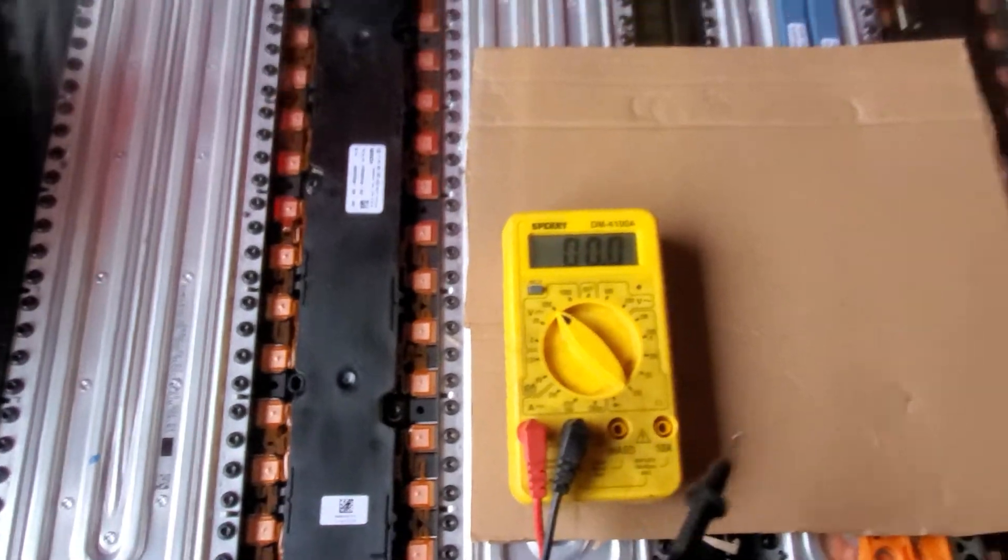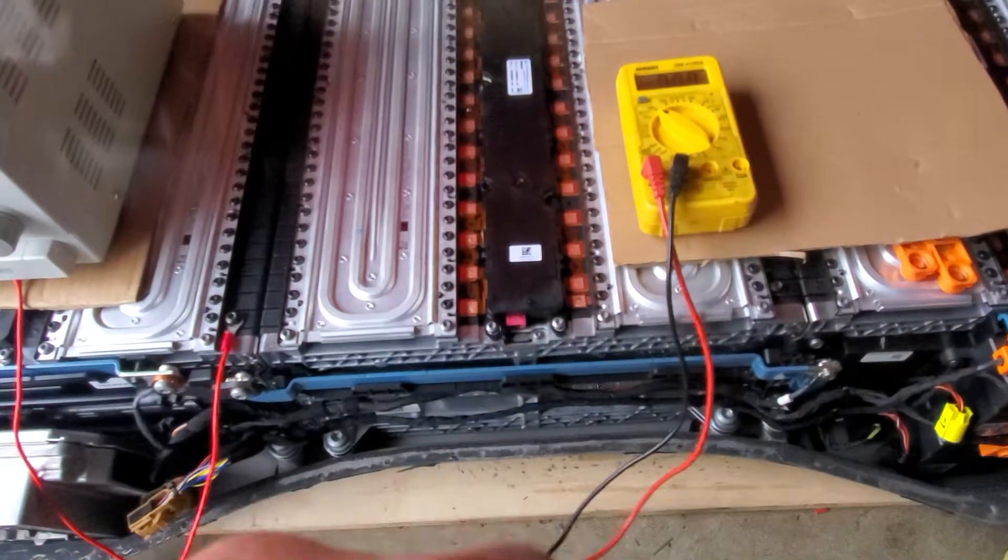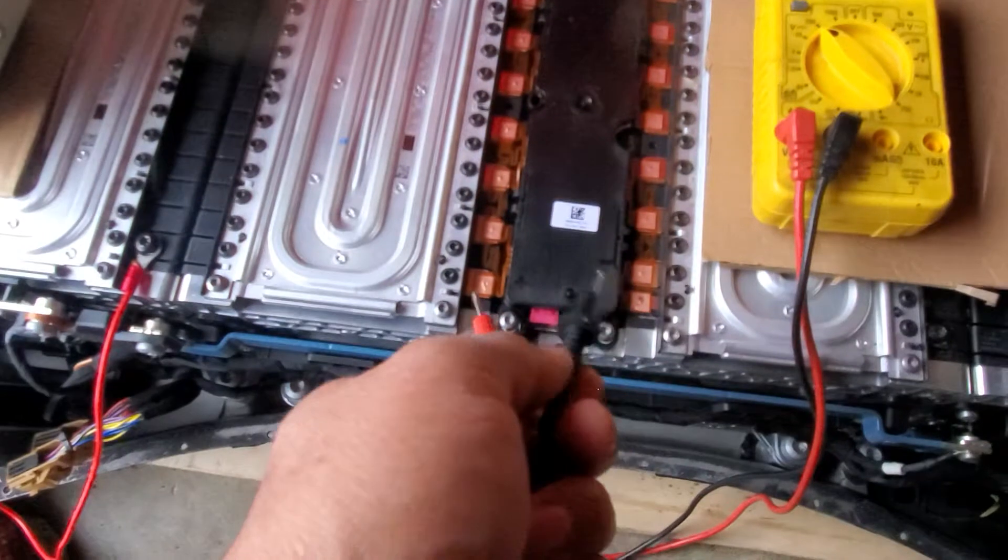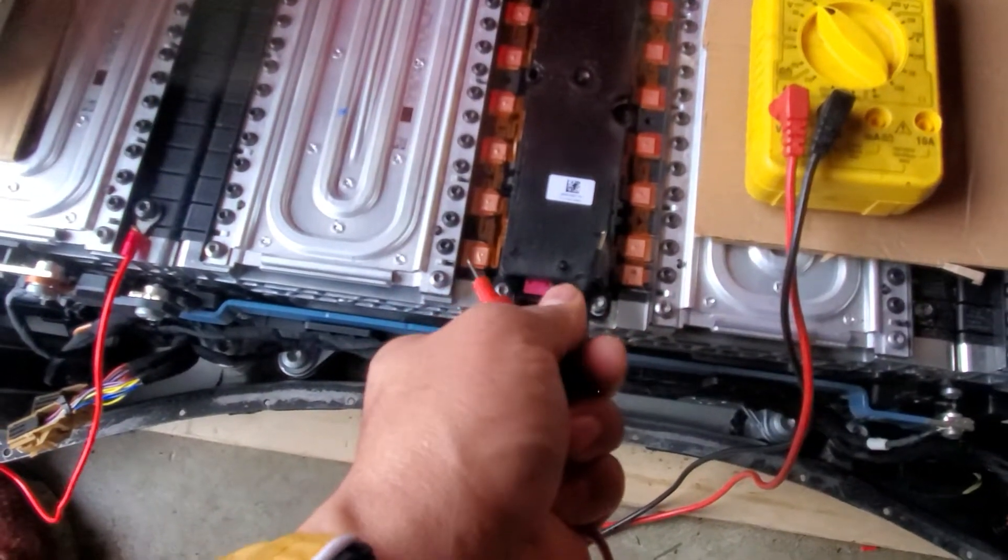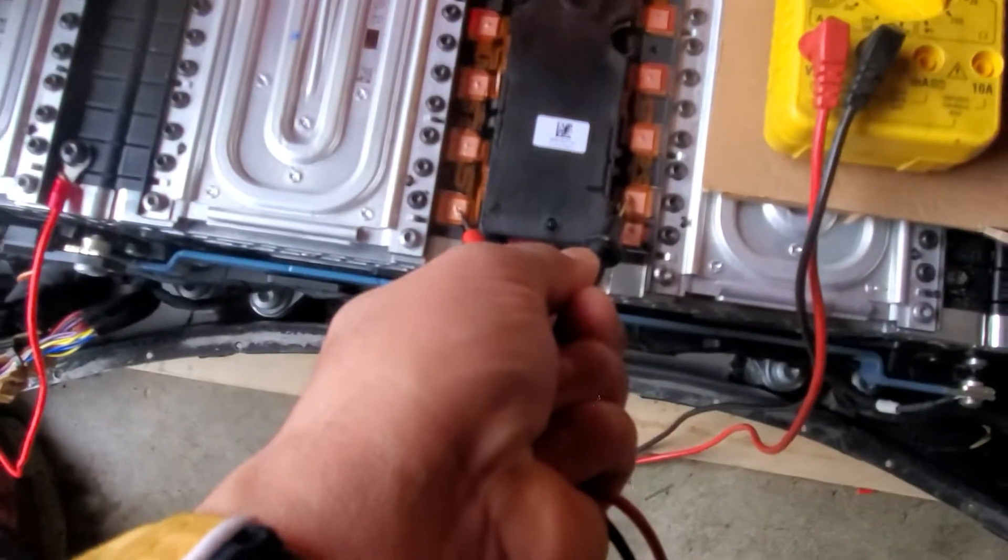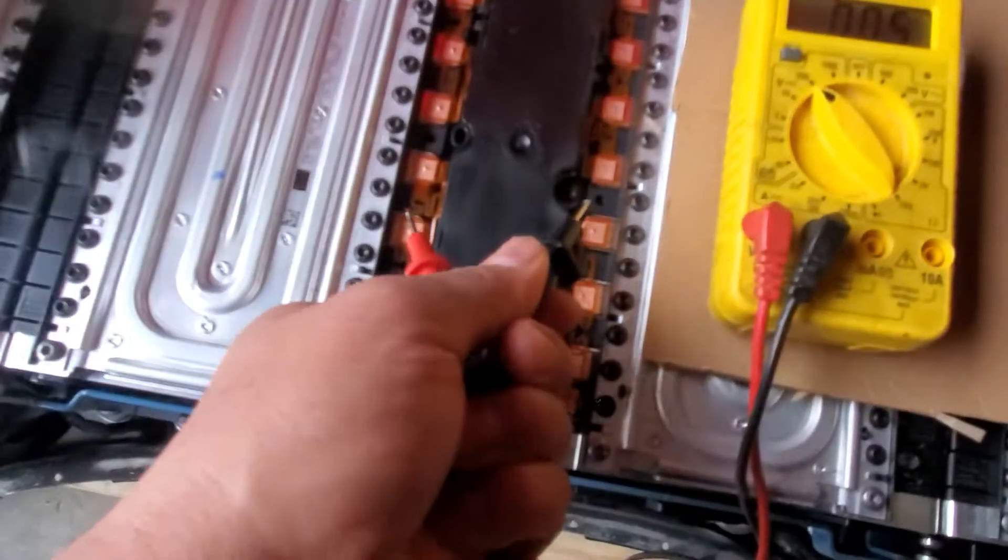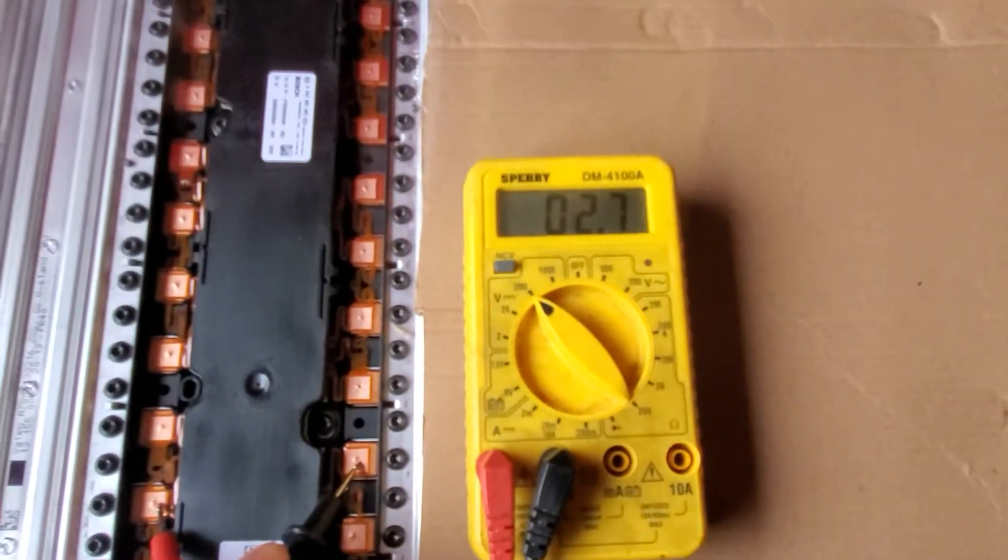So that's my voltage after charging five days, really slow guys. I'll show you every module. That's the positive and negative. I got 2.83 volts on this one. The next one I got 2.8. The next one I got 2.7.